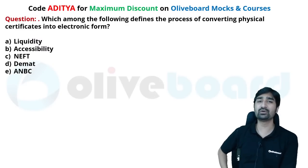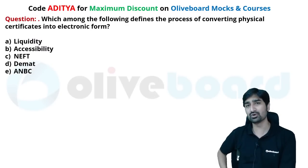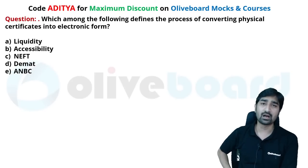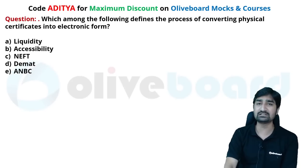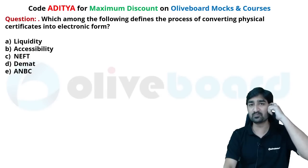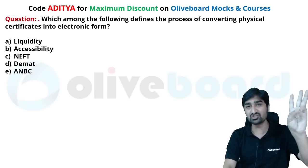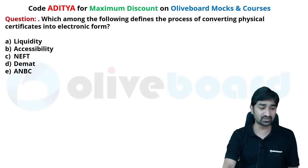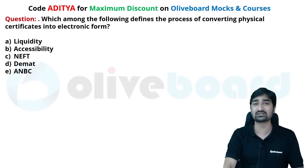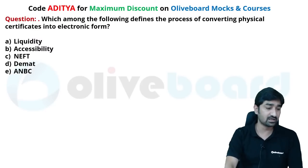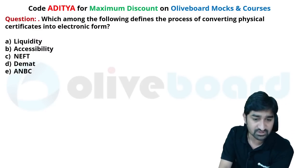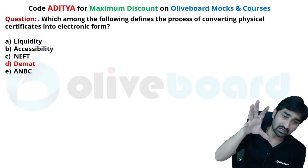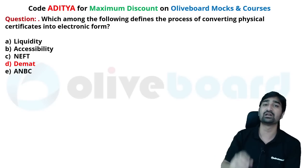Yes, businesses exporting to Sri Lanka and Ukraine would have definitely taken insurance through ECGC, which is the task of ECGC. ECGC provides both financial and political risk coverage. Which among the following defines the conversion of certificates into electronic form? That is called a dematerialized account.